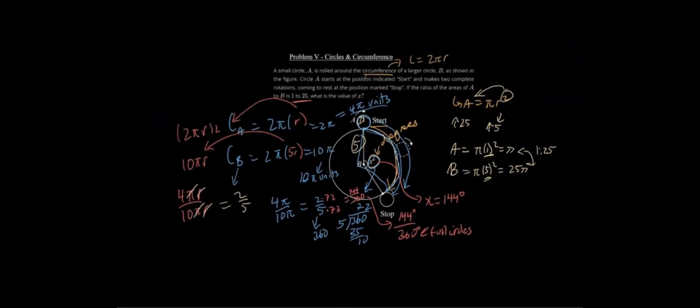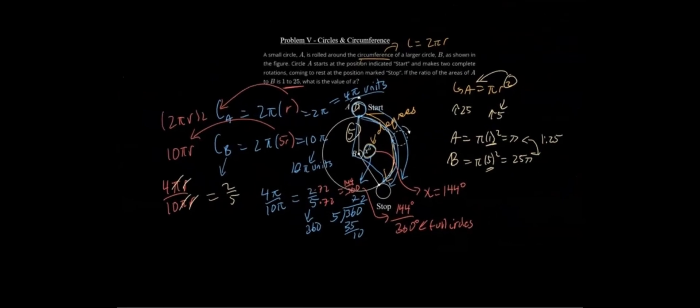And these guys are all just going to cancel. We're still going to get that 2/5 number. So it doesn't really matter what the radii of these circles actually is, but it just matters that they're a factor of 5 apart in the radii.